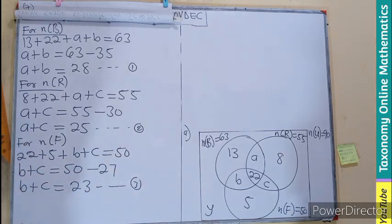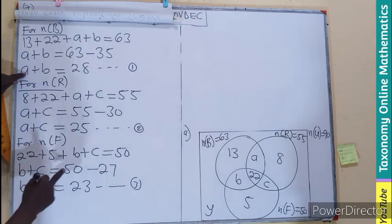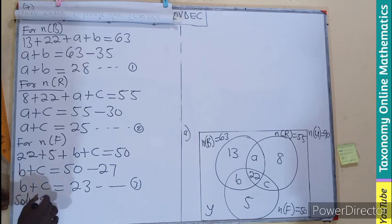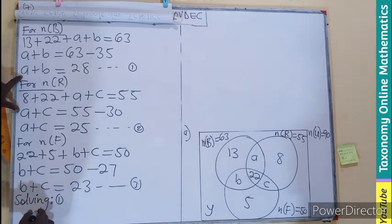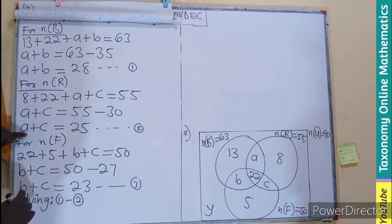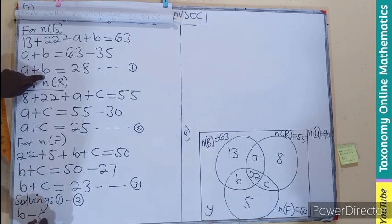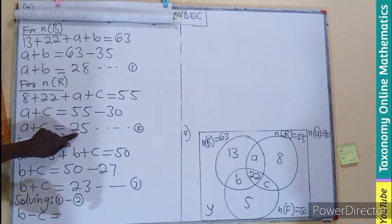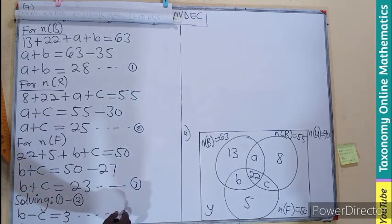We can see equation one has A and B, equation two has A and C. So we solve simultaneously. Let's subtract equation one minus equation two: A cancels, leaving B minus C equals 28 minus 25, which gives us 3 — equation four.